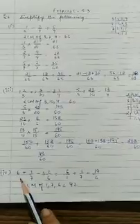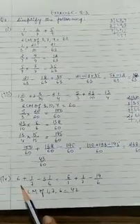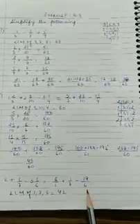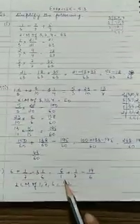Next is question number 4: 6 1/7 minus 3 1/6. If there is nothing in the denominator, we will write it as 1. So 6/1 plus 1/7 minus 19/6. LCM of 1, 7 and 6 is 42.